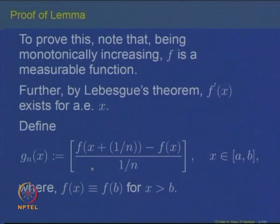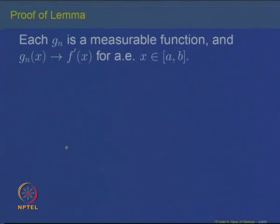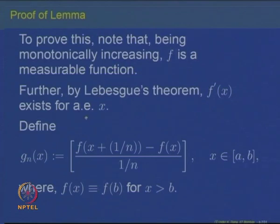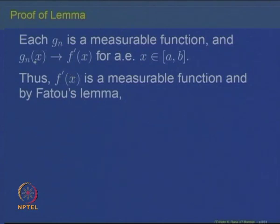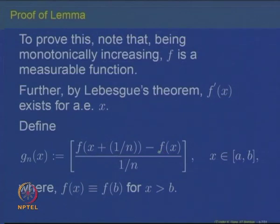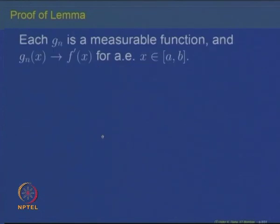The first claim is that each gₙ is a measurable function and gₙ(x) converges to f'(x) for almost all x. That gₙ is measurable is obvious: f is measurable, so f(x + 1/n) is a translate of a measurable function and hence measurable. The difference of measurable functions divided by a constant is measurable. Also, gₙ is non-negative because f is monotonically increasing, so the numerator f(x + 1/n) − f(x) is non-negative. Thus gₙ is a sequence of non-negative measurable functions converging almost everywhere to f'(x).